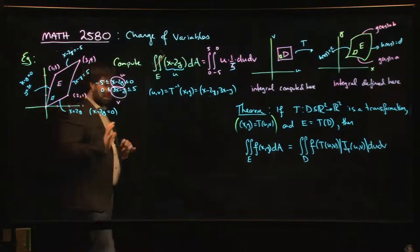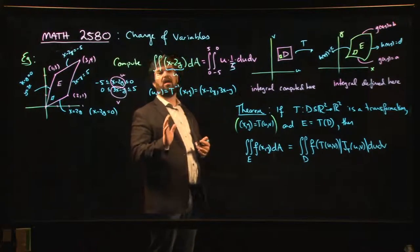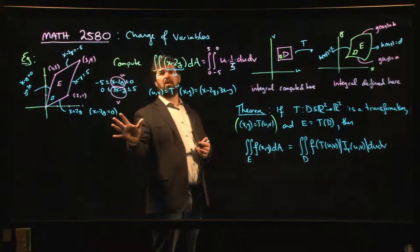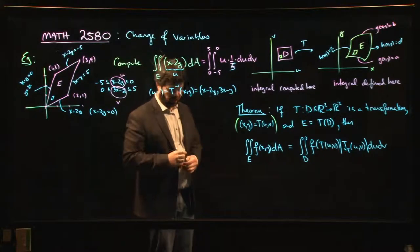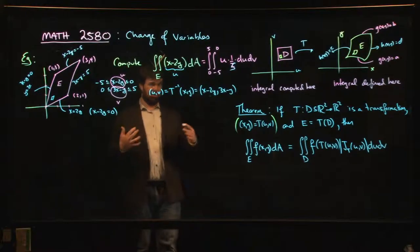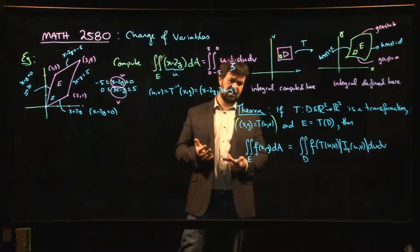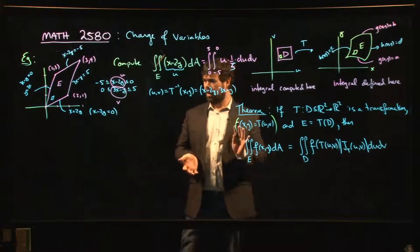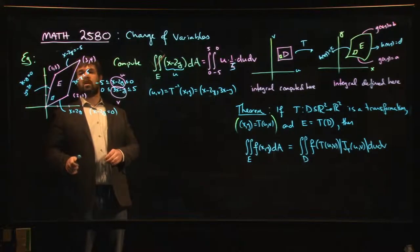Occasionally, it might still be the case that the transformation you're dealing with is going to be suggested by the function, just like it is in one variable. You recognize that there's some kind of chain rule thing going on, you're trying to reverse it, you're trying to simplify the function. Yeah, sometimes it happens, but most of the time it's the region.